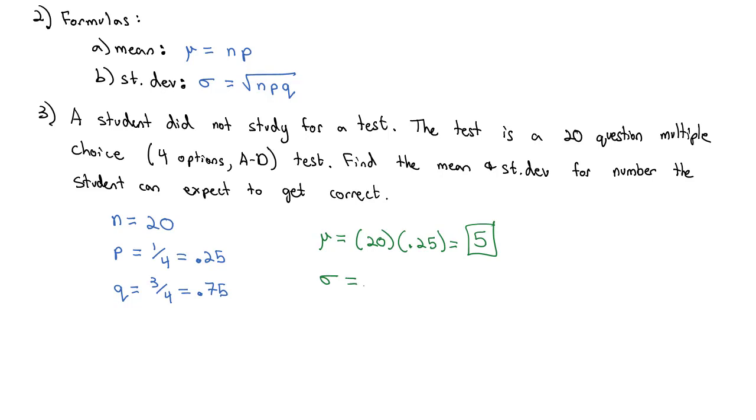But what's the standard deviation around that average? Well, the standard deviation is the square root of n, the sample size 20, times p, the probability of success of 0.25, times q, the probability of failure of 0.75. And if we put this into our calculator, we'll end up with a standard deviation of 1.9365.